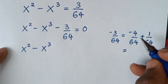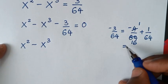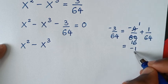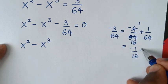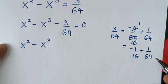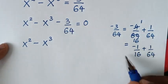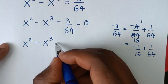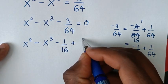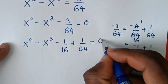Now it will be equal to: simplifying negative 4 over 64 by dividing by 1 and 16, it will be negative 1 over 16. So we have negative 1 over 16 plus 1 over 64. This split gives us minus 1 over 16 plus 1 over 64 equal to 0.